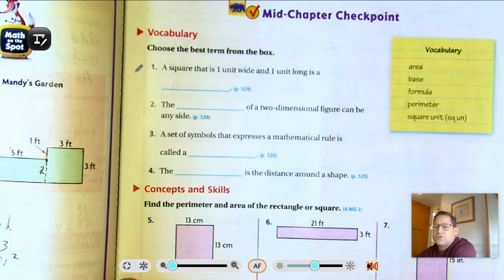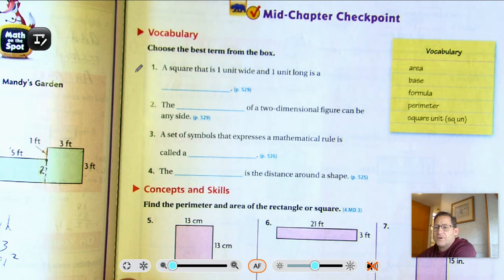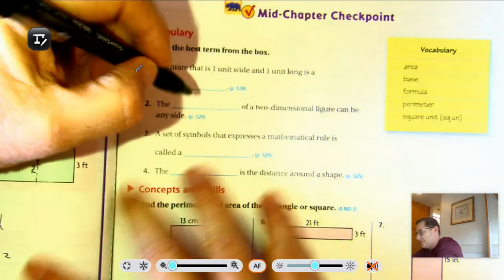The words we're going to use are: area, base, formula, perimeter, and square unit. A square that is one unit wide and one unit long is a square unit.